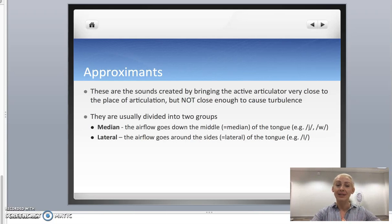So median approximants are the ones when the air is coming through the middle of the tongue, and lateral approximants are the ones where the air is moving down the sides of the tongue.